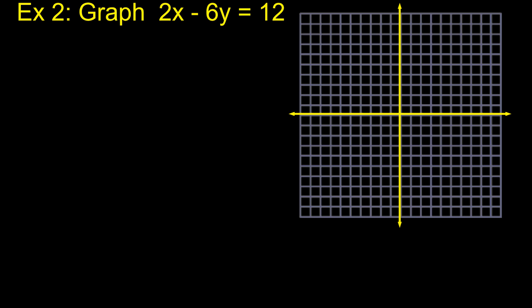All right. Next one. It says graph 2X minus 6Y equals 12. So this is just a different form of a line. It's still a line. There's really nothing fancy here. But this is called standard form. And I'll define that a little bit later. But typically, the easiest thing to do with standard form, if we set up a table, is we're going to find the intercepts. And so we're going to start with when X is 0. And then we're also going to look at what if Y is 0.